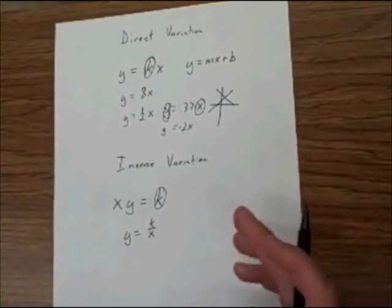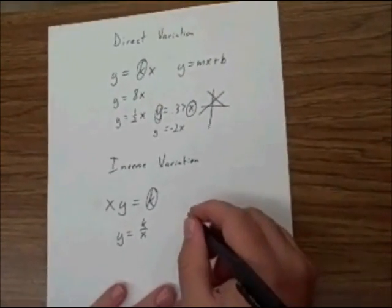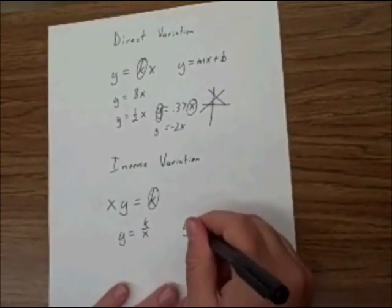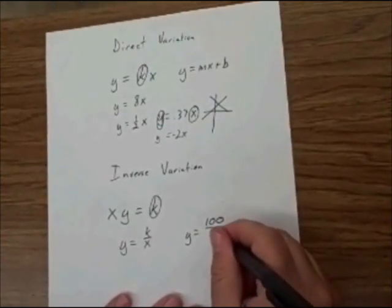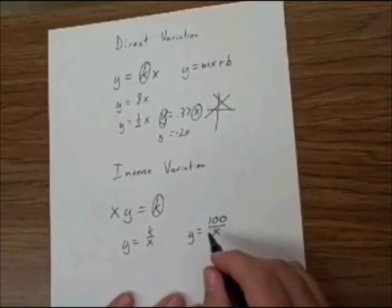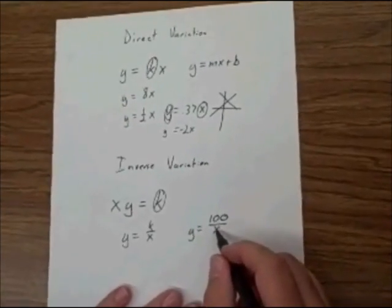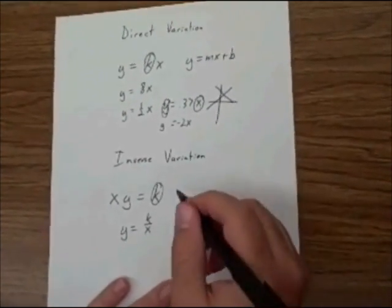You go trick-or-treating, and you get 100 candy bars. If you get 100 candy bars, then it's going to depend on how many friends you have with you, if you split them up evenly, that you will get. So in this, y varies inversely with x.